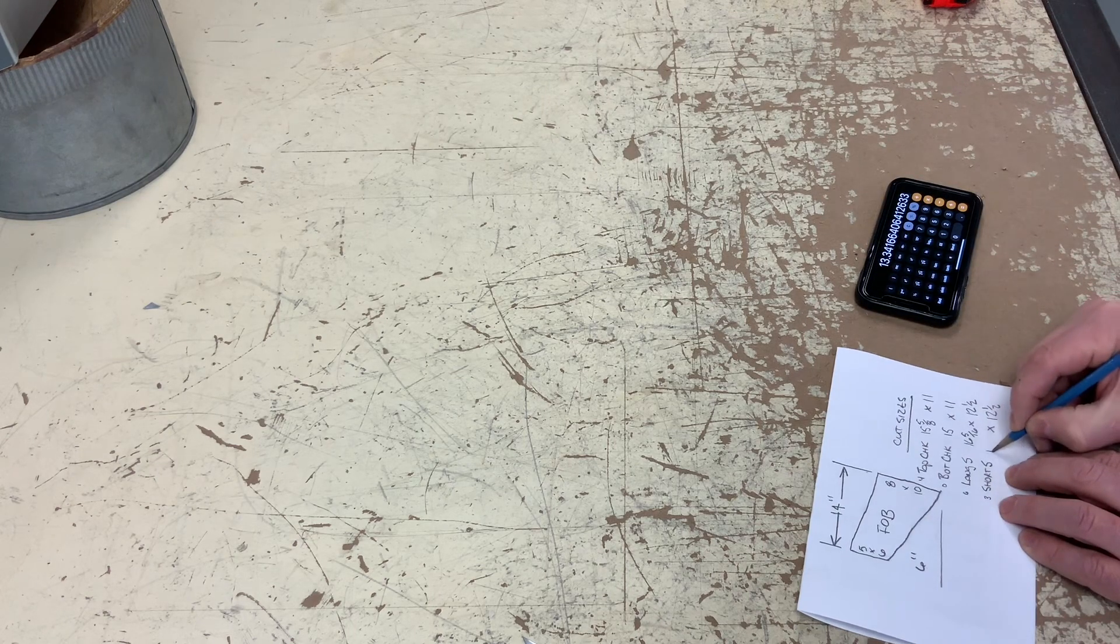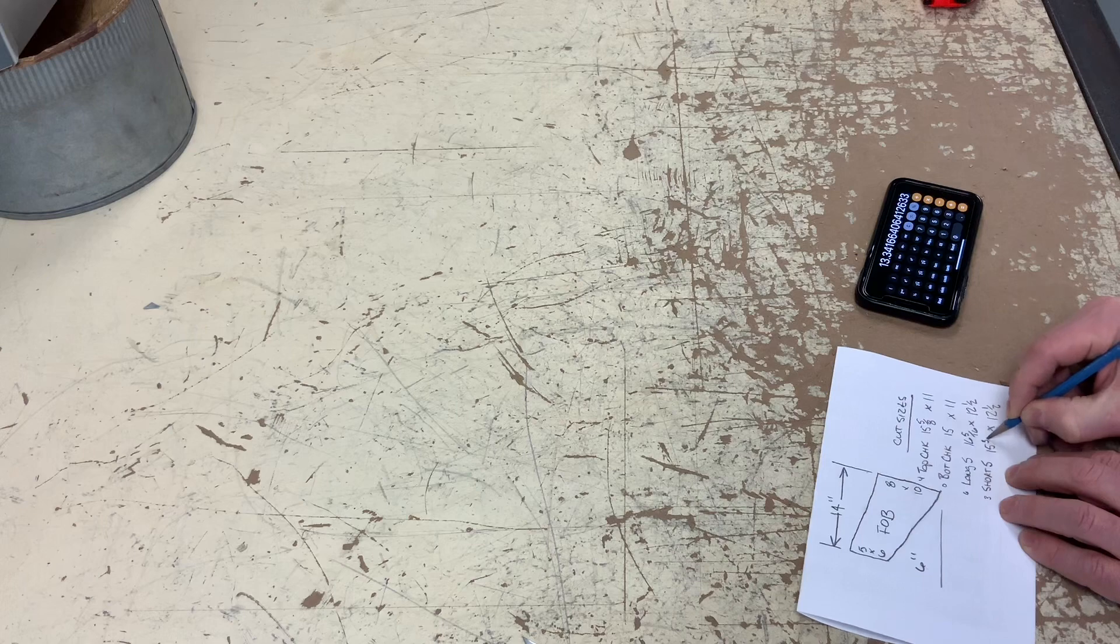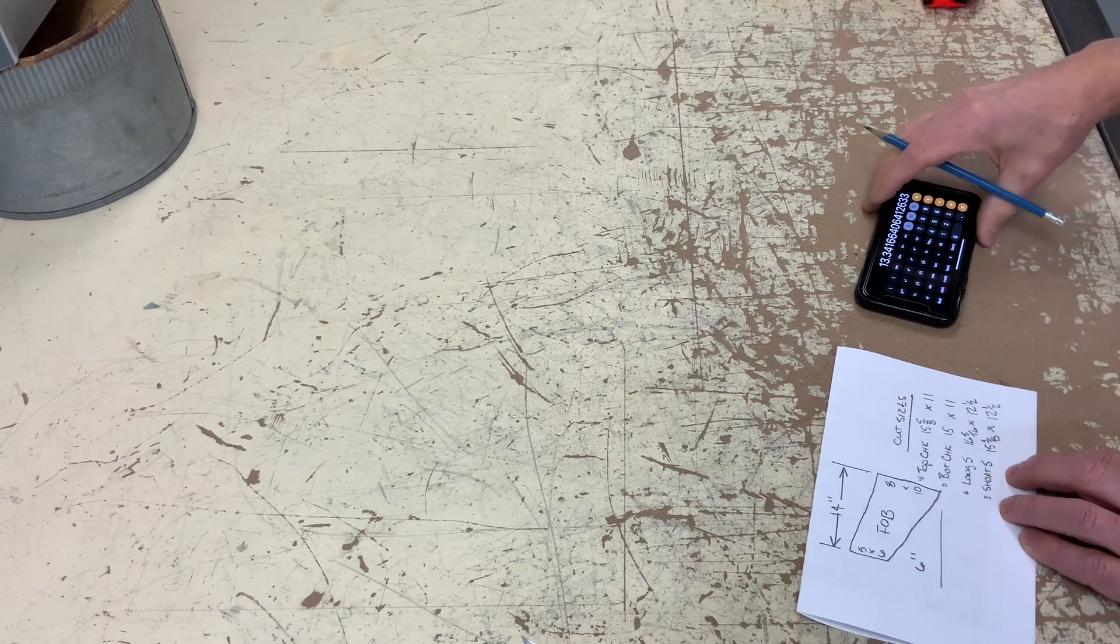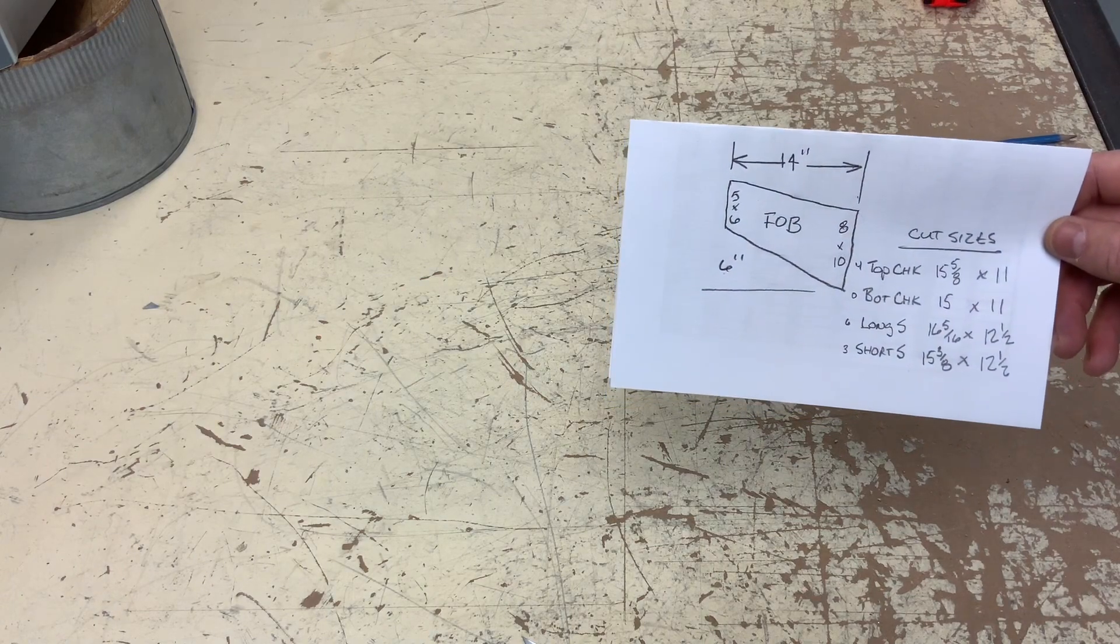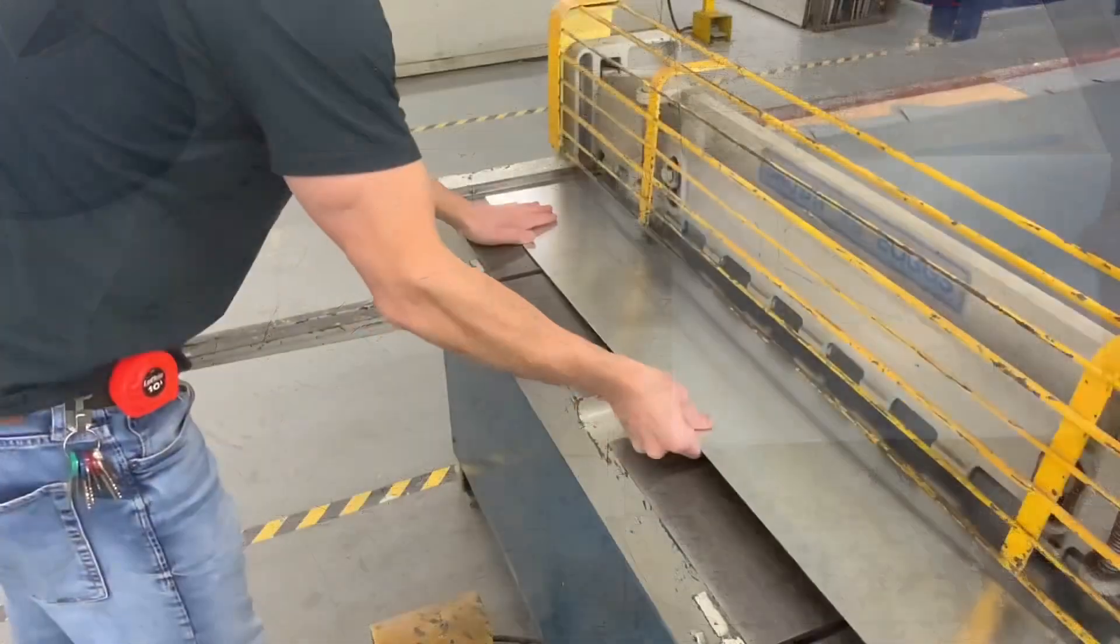So the formula is fitting length squared plus slope squared, square root that number. And here are my cut sizes.